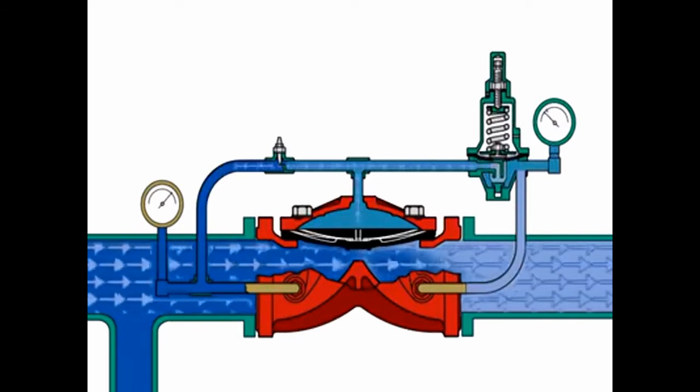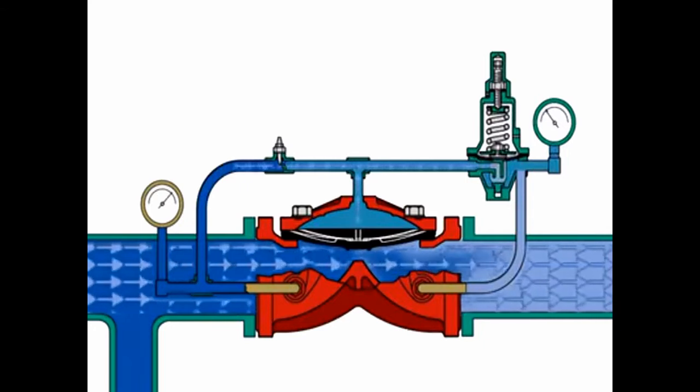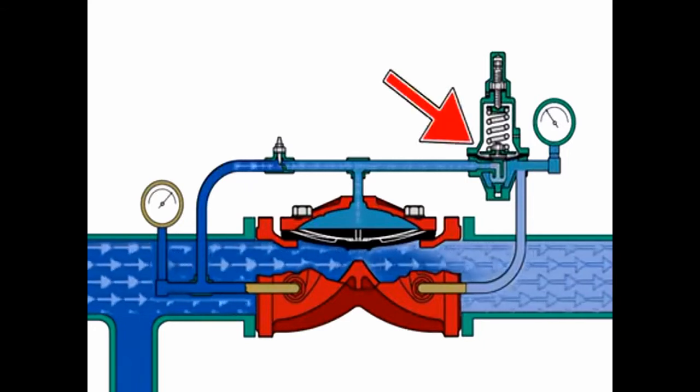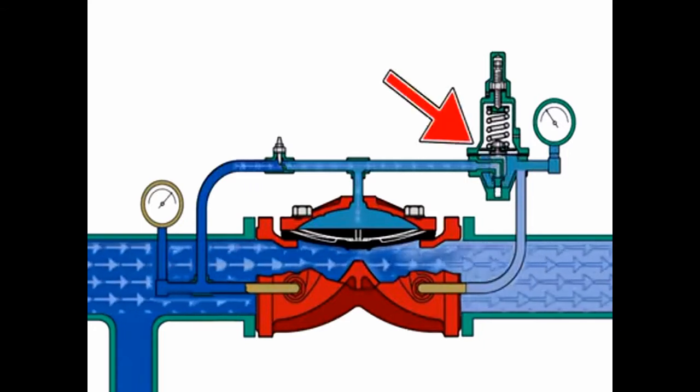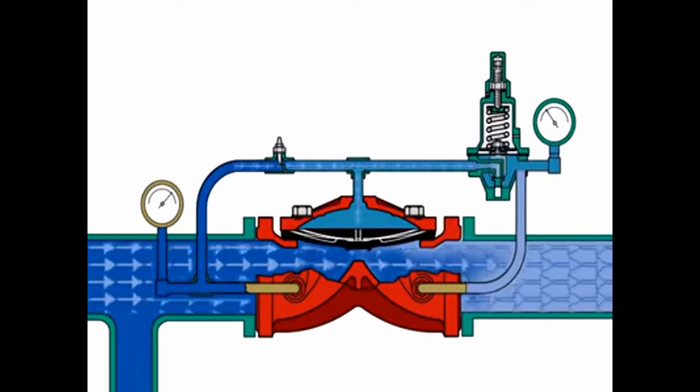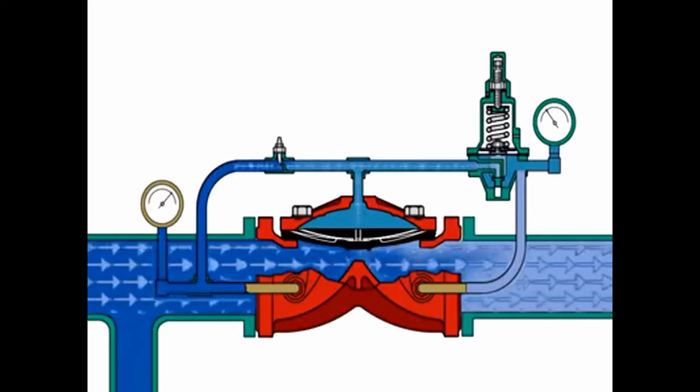As the flow demand continues downstream and the set pressure is met, the pilot valve seat closes to trap pressure in the diaphragm chamber. This keeps the diaphragm lifted at the same position and provides a constant set pressure.